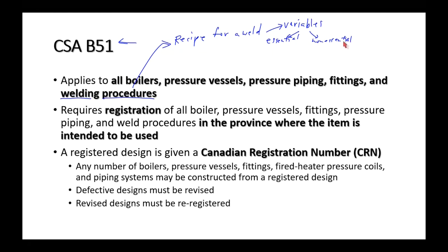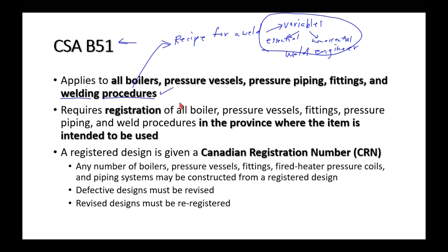For a weld, certain things are essential and certain things are non-essential. A weld engineer — a specialized mechanical engineer — designs a weld procedure. CSA says all weld procedures must be according to CSA B51. You can't just spray weld metal over pipes in your plant; there must be a weld procedure and a qualified welder conducting that procedure.